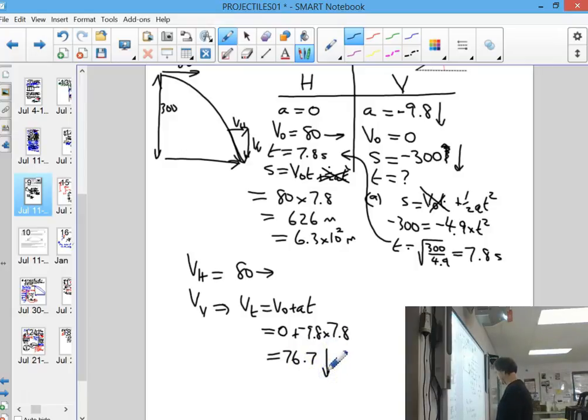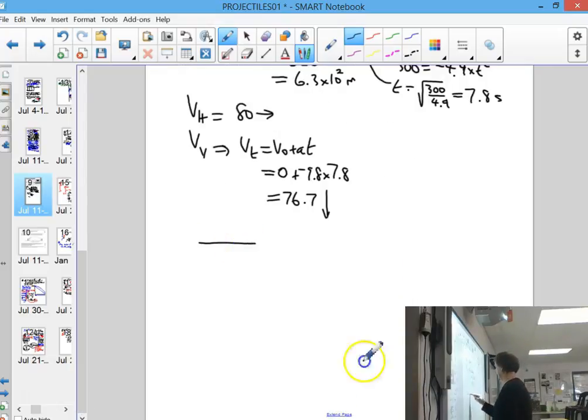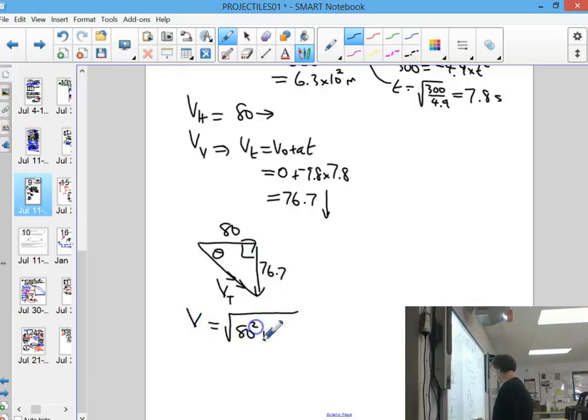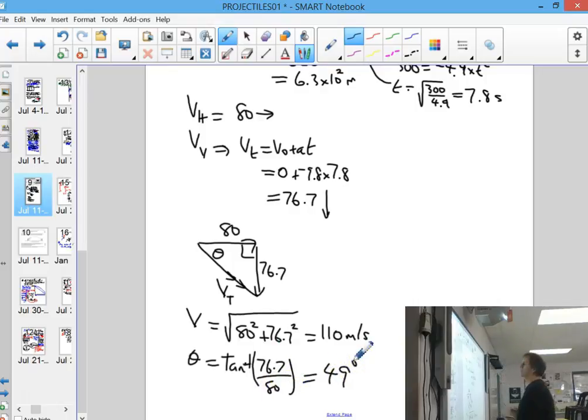To combine those, you're going to get a vector diagram. The vector diagram would be 80 over 76.7, and that gives you the total vector there, the final velocity at that time. You're going to do the Pythagorean theorem: 80 squared plus 76.7 squared. You will get 110 meters a second. And the angle, tan inverse of 76.7 over 80.